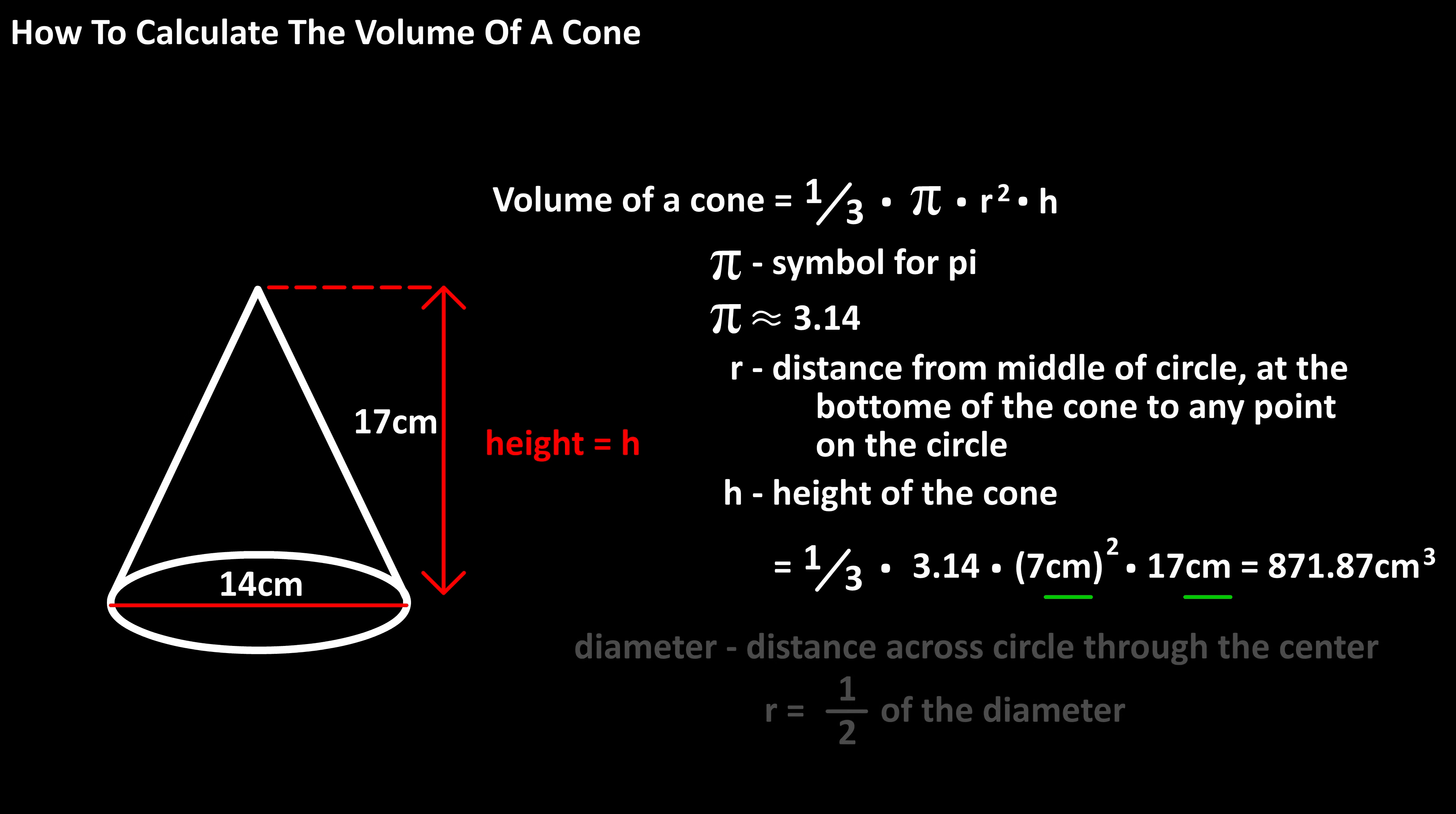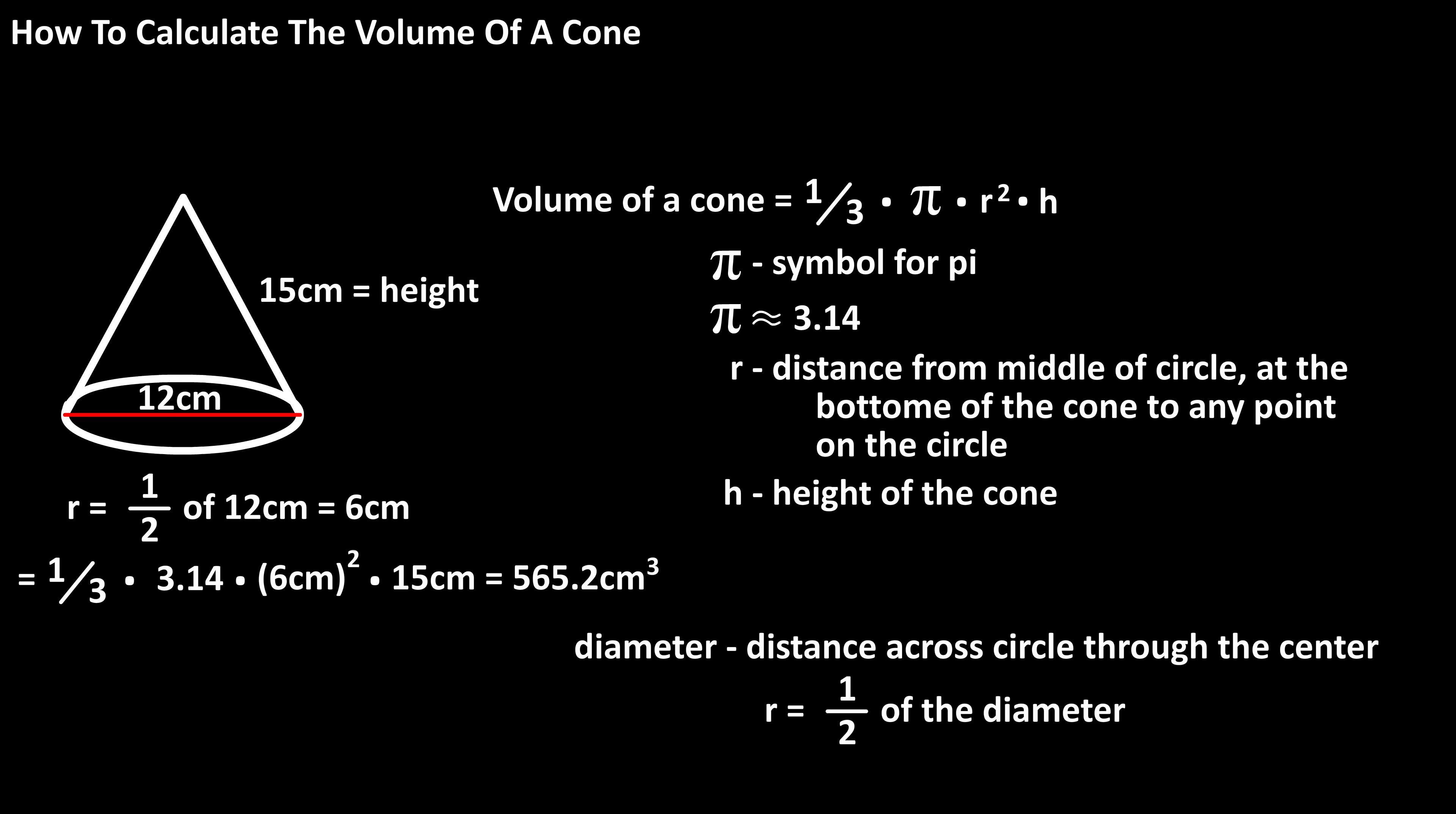If you're given the length of the diameter, d, which is the distance across the circle through the center of the circle, you can just divide that number in half to get the radius. Then plug into the formula, as you see in this example.